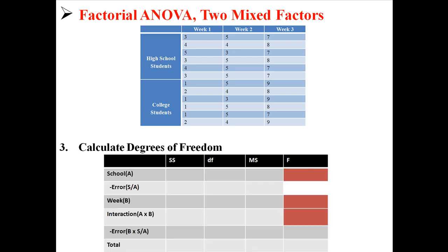Next, we calculate the degrees of freedom. We're going to have five degrees of freedom: one for school, one for week, one for the interaction, one for total, and two different error terms. Notice that we have two different error terms because we have both independent and dependent factors. Independent factors, like school, have their own error term, and dependent factors, like week and the interaction (because it contains week), have their own error term. So now we're dealing with two error terms instead of just one.